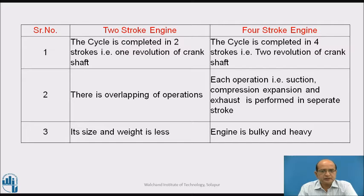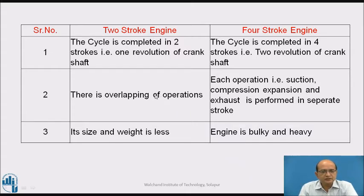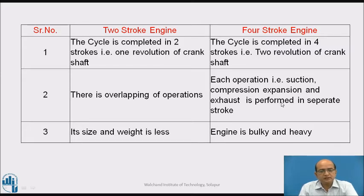The second point of comparison is related to the operations carried out during completion of one cycle. In case of the two-stroke engine, there is overlapping of operations — suction, compression, exhaust, and expansion are completed in combination. Whereas in case of the four-stroke engine, each operation is completed separately and distinctly: the first stroke is suction, second is compression, third is expansion of gases, and fourth is exhausting or expelling of gases from the cylinder to the atmosphere.